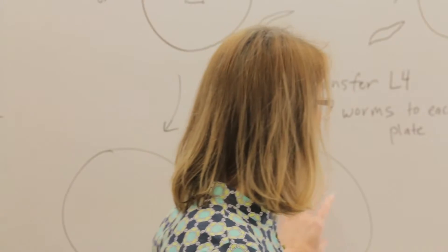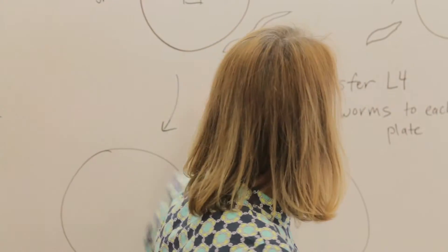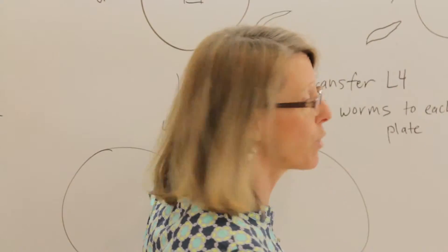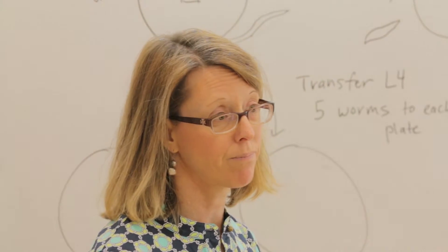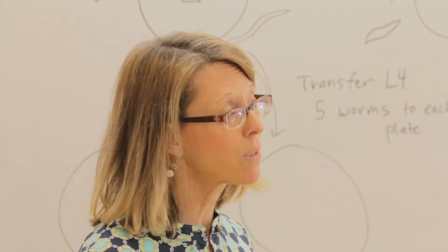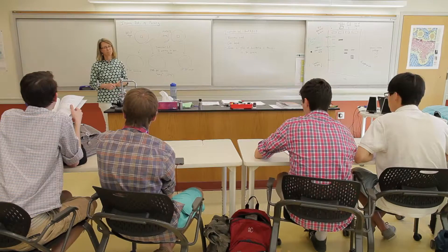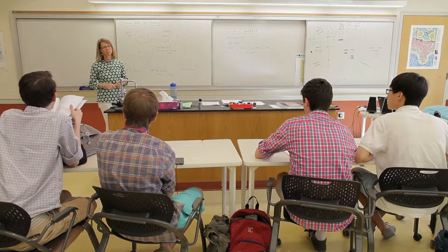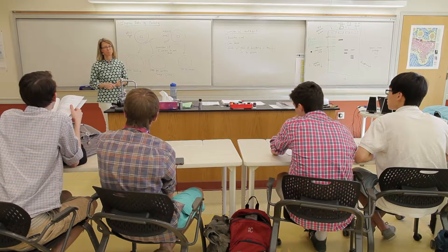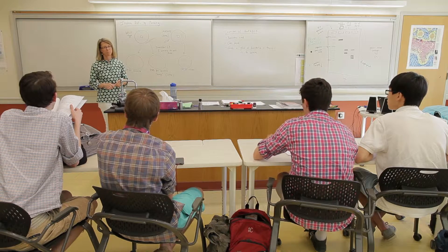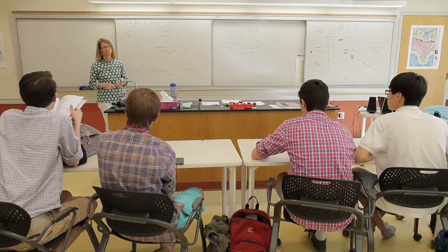These worms are going to go from looking wild type to looking dumpy wild. They're going to look dumpy because the collagen isn't there — it's called DPY. DPY13 is a collagen gene and we're suppressing that.